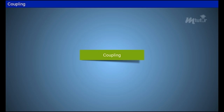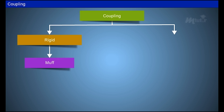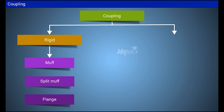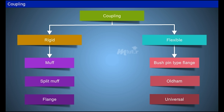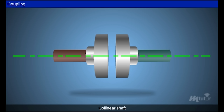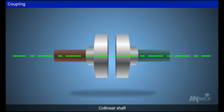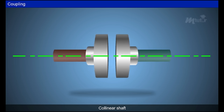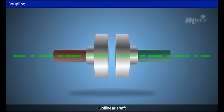Couplings are classified into two types. For collinear or coaxial shafts, rigid couplings are used. For non-collinear or non-coaxial shafts, flexible couplings are used. In collinear shafts, the axis of both shafts meet at the same line, so there are not many possibilities of vibration during power transmission.